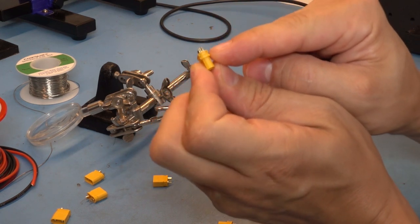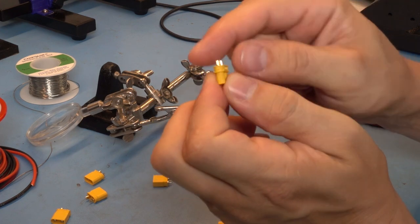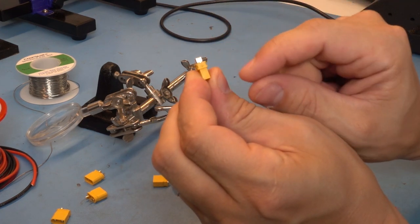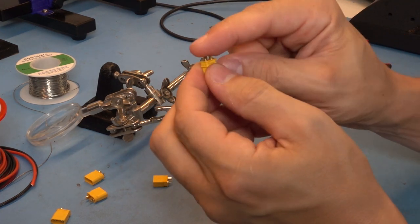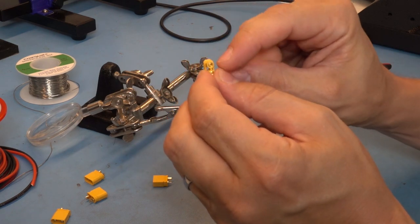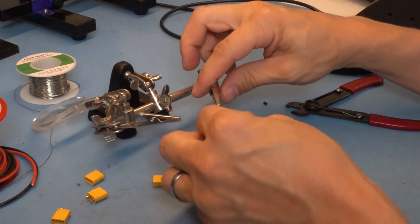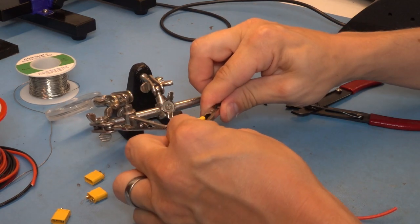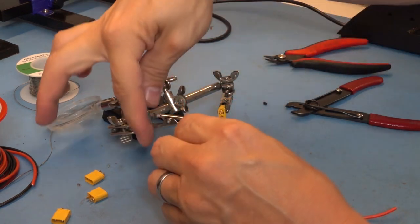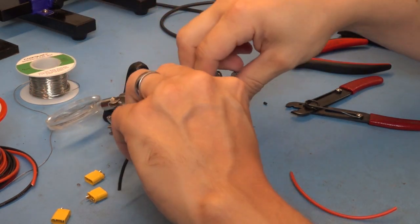The XT30s all have a minus sign or plus sign on them, which you can use to identify the negative. The negative terminal is also the one that's rounded. I usually start with the negative terminal upright and the black wire like that.